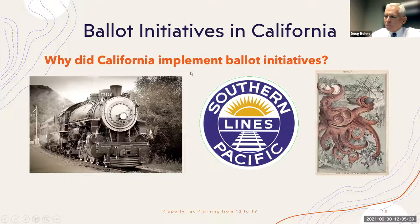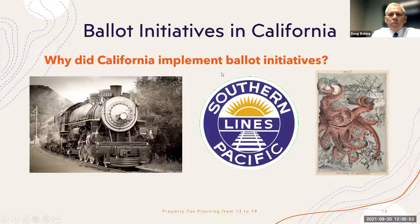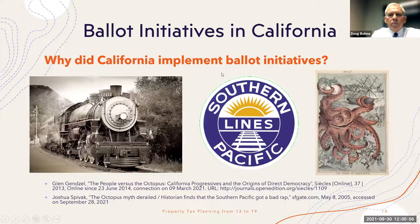They created the ballot initiative process and also passed woman suffrage in California — a very significant historical time period. It's also interesting to note that there was a novel by Frank Norris called The Octopus, released in 1901, about the Southern Pacific Railroad monopoly. Many newspapers had cartoons depicting the monopoly as an octopus.